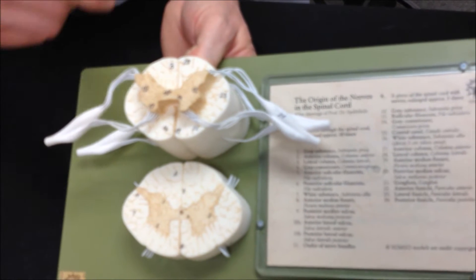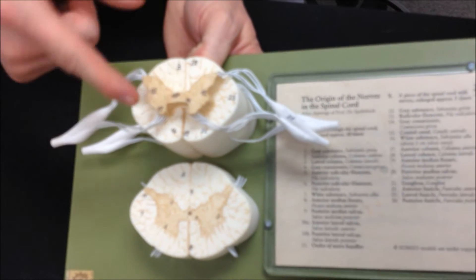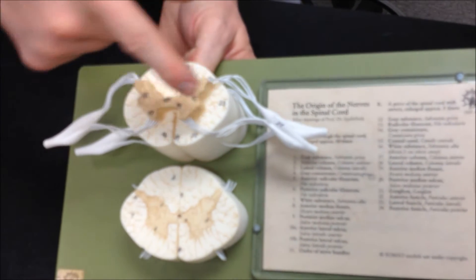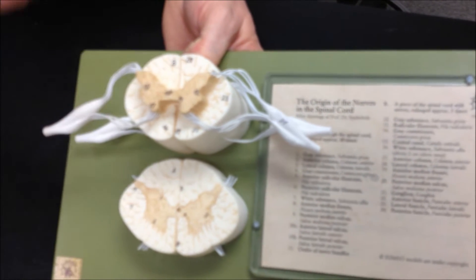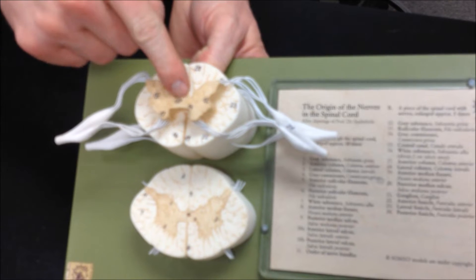So if we look at the gray matter here, the posterior horns, and the lateral horns, the bumps on the side, and the anterior horns. And the communicating part is the gray commissure. And the little spot in the middle is the central canal.